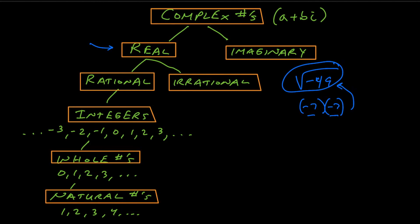Once you determine that it's real and not imaginary, you have to decide: is it a rational number or an irrational number? It's one or the other — it can't be both. One way to determine this is to think about the word rational. See the word ratio in there? Ratio means any number that can be written as an integer divided by another integer. An integer is basically any round number — positive, negative, or zero.